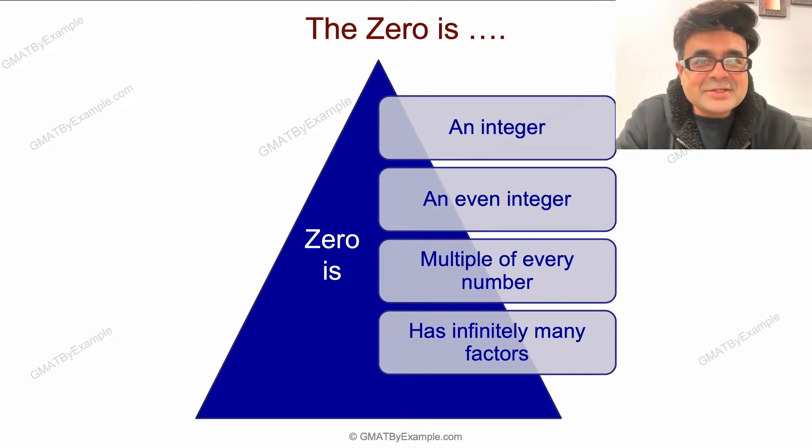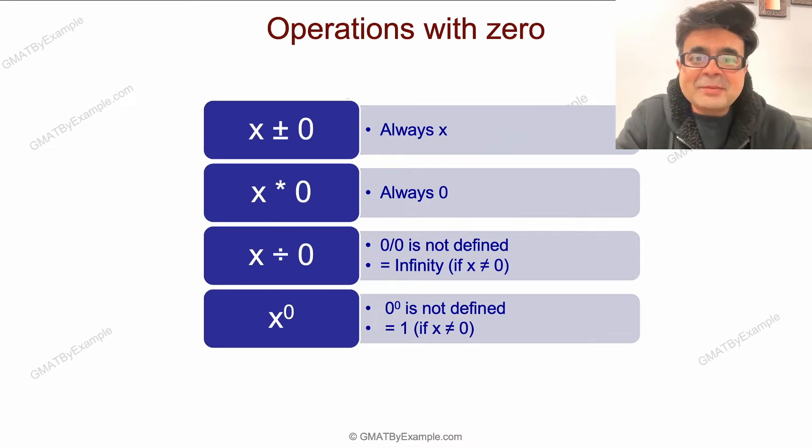Important operations with zero: If you add or subtract zero to any number, you get the number itself. If you multiply zero with any number, you get zero. You cannot divide any number by zero, especially in the context of GMAT. Any non-zero number raised to the power of zero is one.